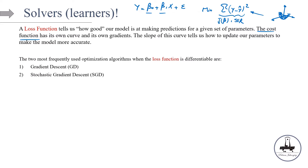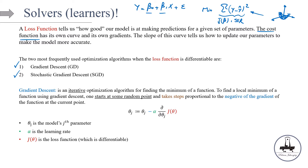The most frequently used optimization algorithms when the loss function is differentiable are gradient descent and stochastic gradient descent. In this video I'm going to cover gradient descent, and in the next one we will talk about why we should go beyond gradient descent and what caveats of gradient descent force us, at least for some machine learning models, to go beyond it. So what is gradient descent? Gradient descent is an iterative optimization algorithm — an iterative solver — for finding the minimum of a function. To find a local minimum using gradient descent, we need to start from a random point and take steps proportional to the negative of the gradient of the function at that point.